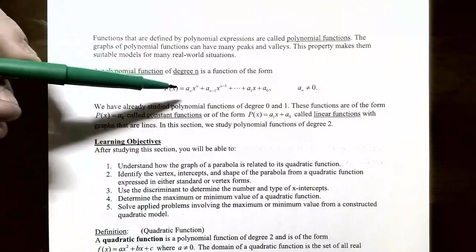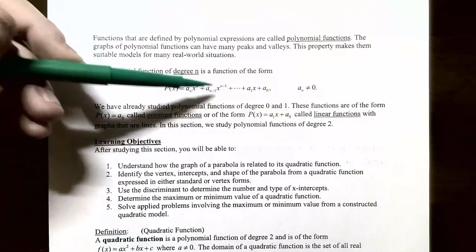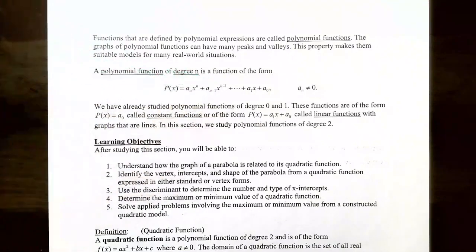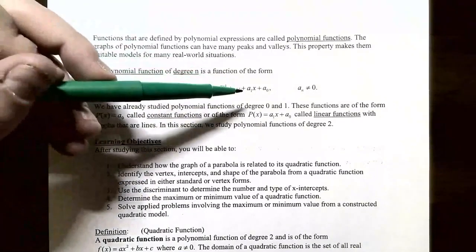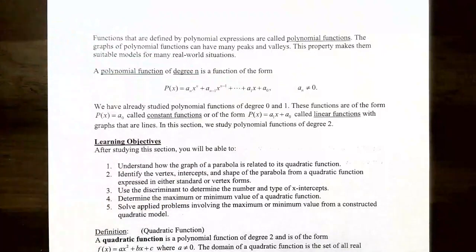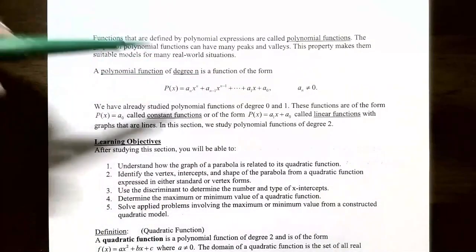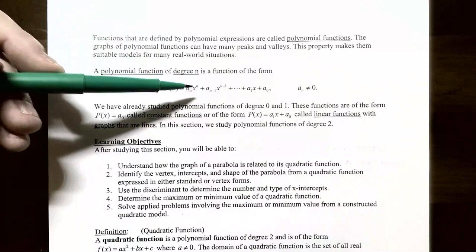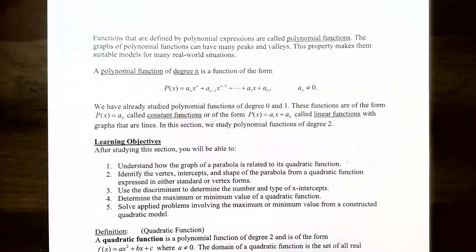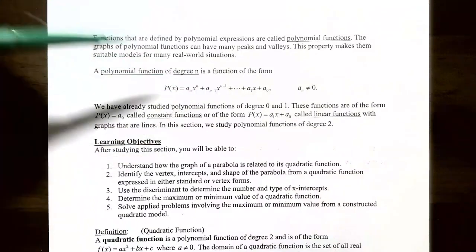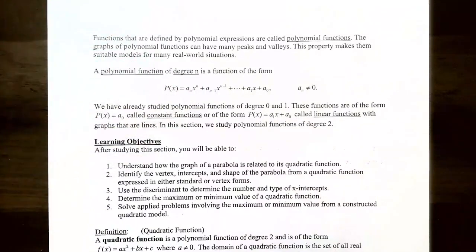The polynomial function has coefficients a_n, a_{n-1}, a_{n-2}, all the way down to a_1 and a_0. These are called the coefficients of the polynomial function and are real numbers. The highest power on the variable x is called the degree of the polynomial function.